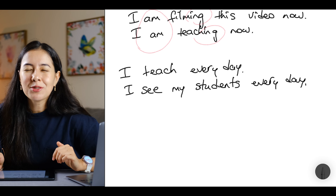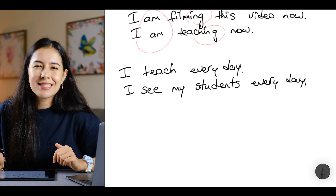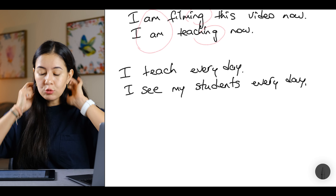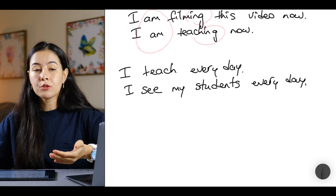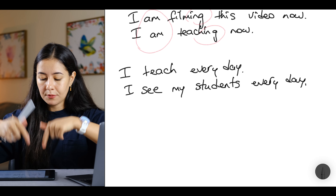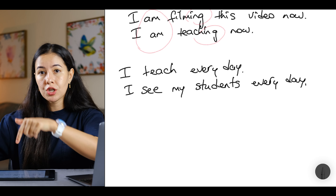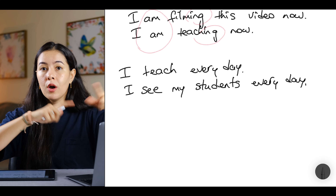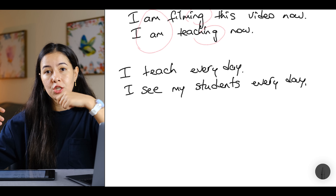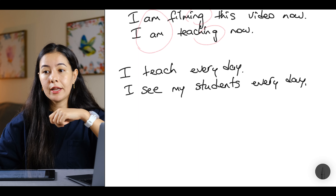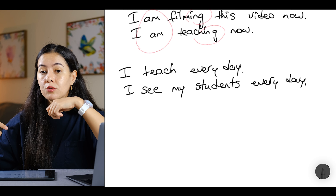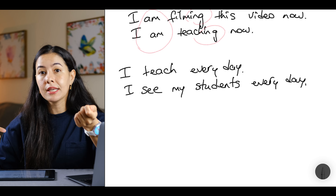You don't have to know the tense's name — you need to know how to use it. When you talk about general things, use this form: I teach. I go. I cook. I wake up. I brush my teeth every day. I go to work every day. I go to school by bus every day.